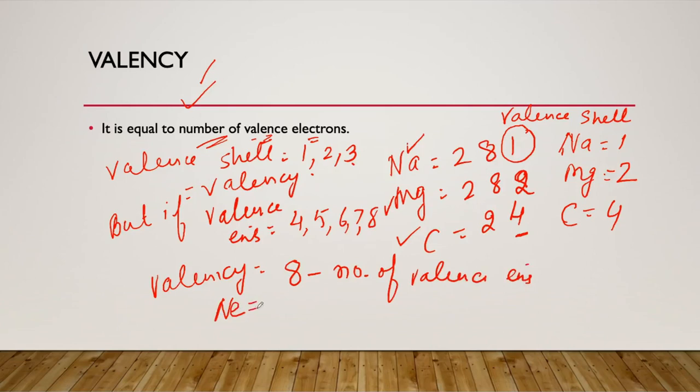Let me give you a common example: neon. Neon's atomic number is 10, which means its electronic configuration is 2, 8. If we look at this formula, the valence shell has 8 electrons. Then what will neon's valency be? Is it 8? But no, neon's valency is 8 minus the number of electrons in the valence shell, that is 0. This means neon has valency 0, so neon is a noble gas.